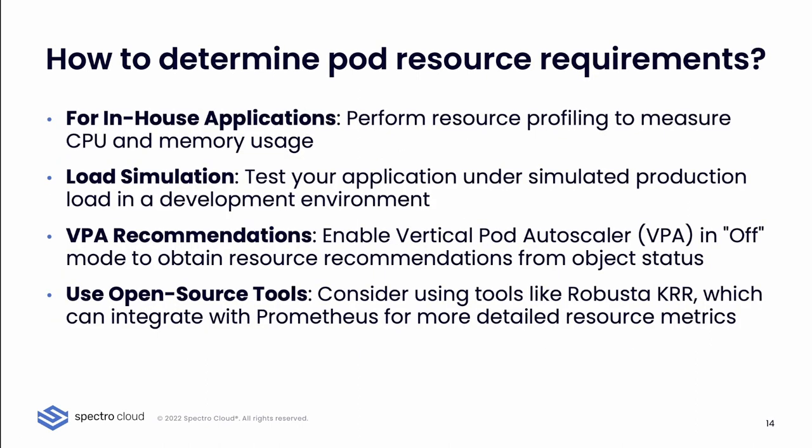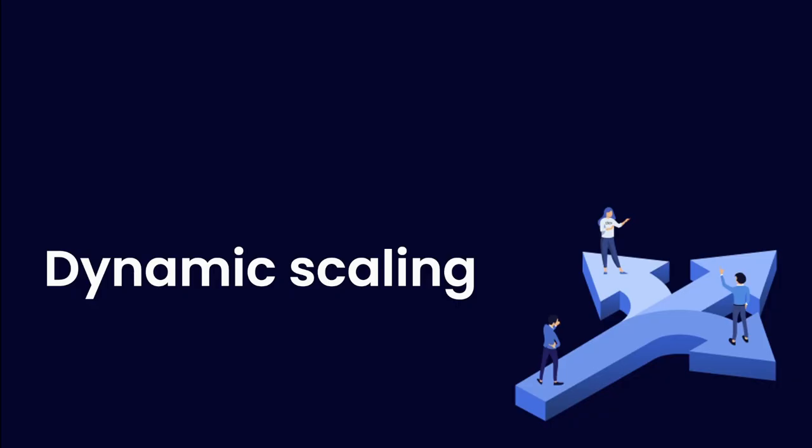So how do you properly determine pod resource requirements? For in-house applications, you can perform resource profiling to measure CPU and memory usage, then set resource requests and limits accordingly. You can also perform load simulation — test your application under a simulated production load in a development environment. Another option is to enable VPA in dry-run mode to obtain resource recommendations without actually implementing them. A final option is to use open source tools such as Robusta KRR — Kubernetes Resource Recommender — which integrates with Prometheus for more detailed resource metrics.